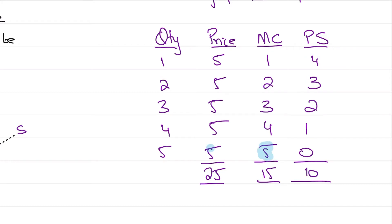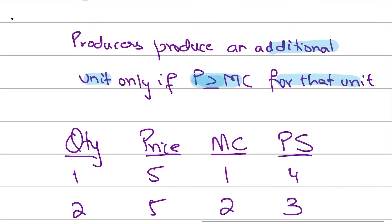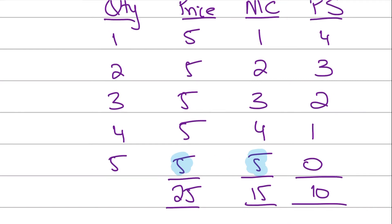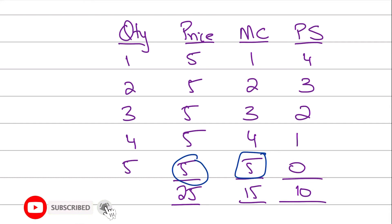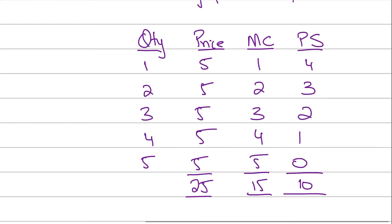For the fifth unit, the marginal cost jumps to five dollars, equal to the price. The rule says producers produce an additional unit if price is greater than or equal to marginal cost. Since price equals marginal cost here, the producer will still produce this unit because the minimum they're willing to accept is five dollars and they're getting exactly five dollars. The producer surplus on this unit is zero.